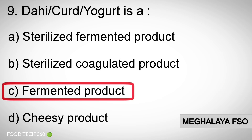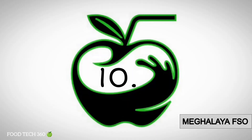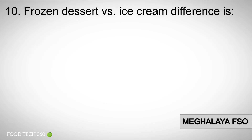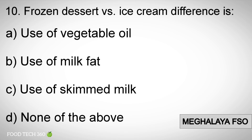Correct answer: C) fermented product. Question number 10: Frozen dessert versus ice cream difference — options: A) use of vegetable oil, B) use of milk fat, C) use of skim milk, D) none of the above.